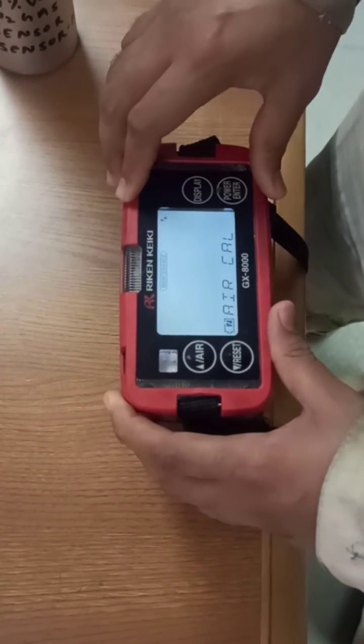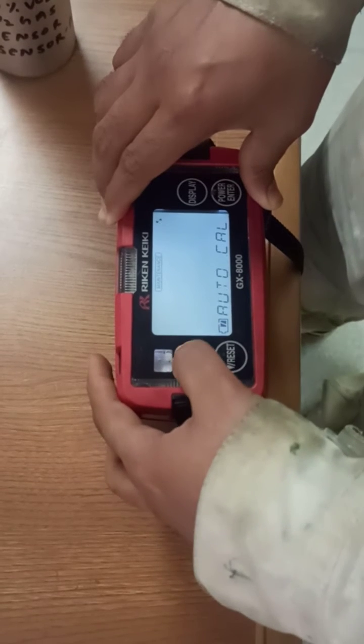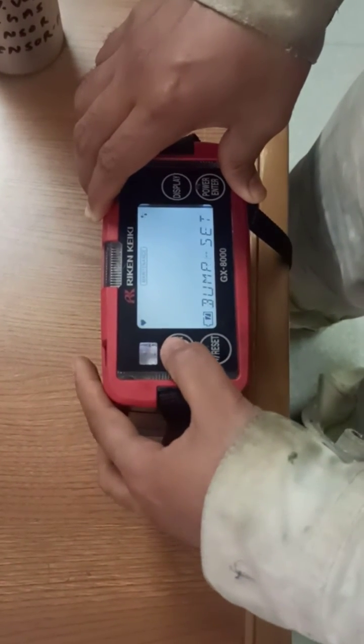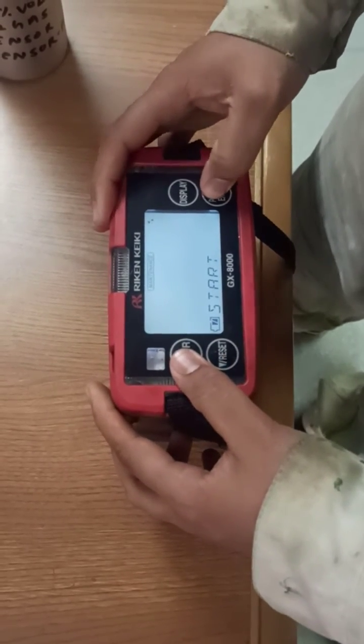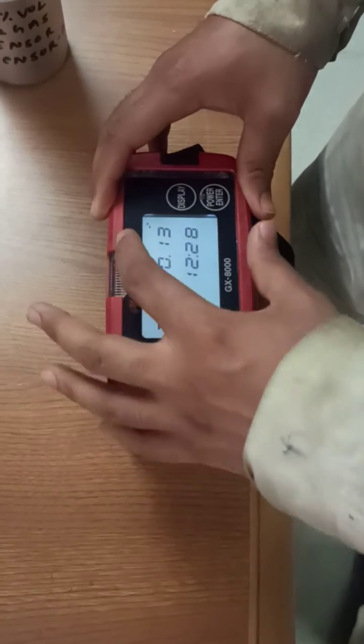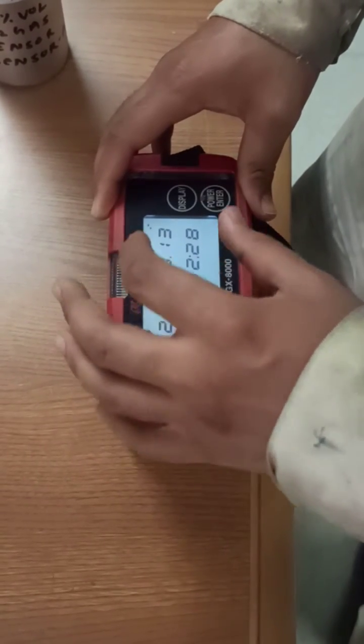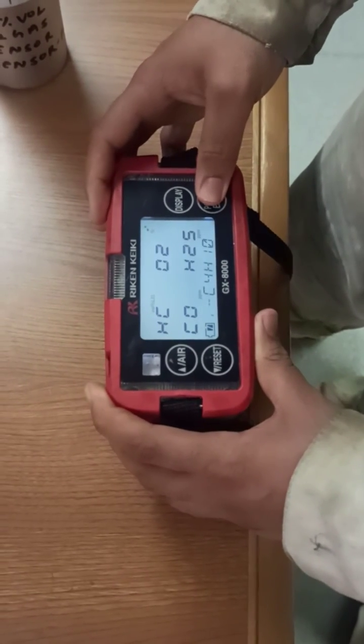Now we have completed the air calibration. We can reset it. You can choose the start option. Now the gas meter will start and show some readings - all gas is zero, oxygen 20.9. Then you can turn it off.